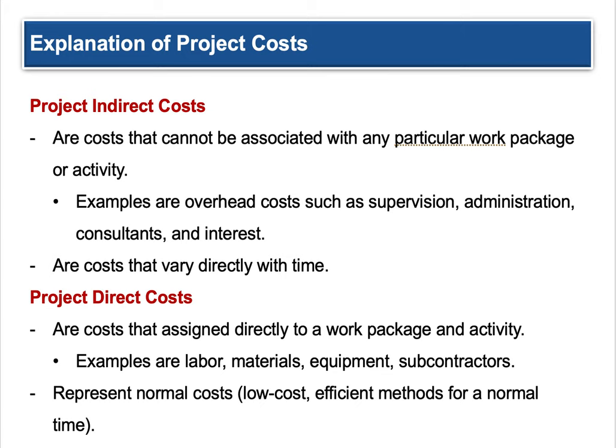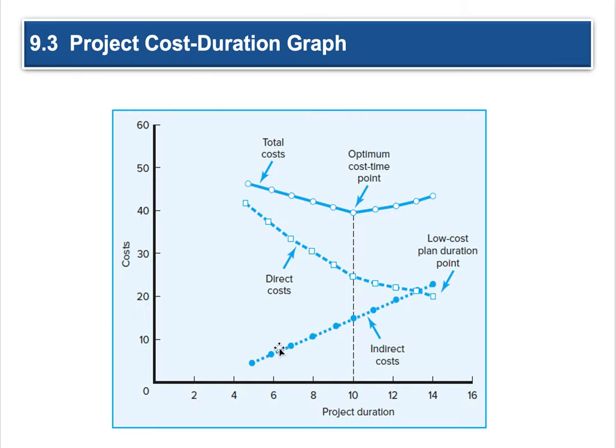Project indirect costs are costs that cannot be associated with any particular work package or activity within the project. Examples are overhead costs such as your supervisor, the administration of the corporation, consultants, and interest incurred on loans. These are costs that vary directly with time — they go up over time. That's the indirect cost line going up.